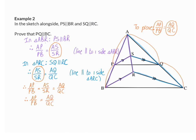Because we know that these two proportions are now the same, we can say that line PQ that connects them will be parallel to BC, the third side of the triangle. My reason: line divides two sides of the triangle in the same proportion.